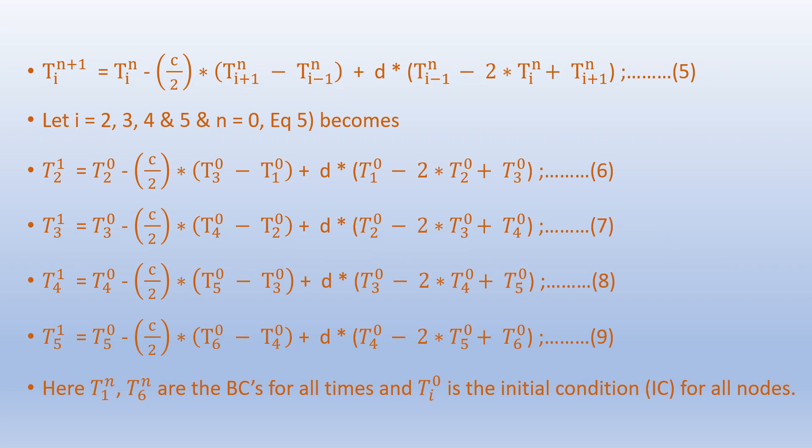Applying the FTCS equation with i equals 2, 3, 4, and 5 and n equals 0 for the first time step, we can find the temperatures at the interior nodes. The resulting equations are labeled 6, 7, 8, and 9. Here T1^n and T6^n are the boundary conditions for all times, and T_i^0 is the initial condition for all interior nodes.